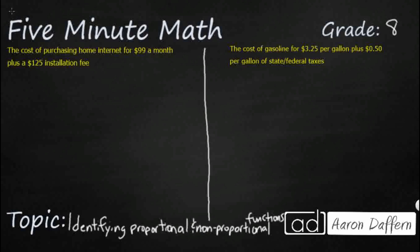The basic cost of purchasing home internet. So you've got two things working here: $99 a month and a $125 installation fee. So if we wanted to put this into an equation,